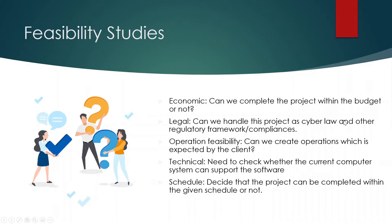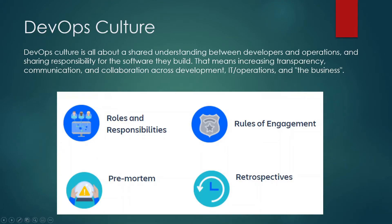Now let's talk about DevOps culture. I'm not explaining exactly what DevOps is here — that's out of scope. DevOps culture is a cultural shift. It's not simply about adopting agile planning, automated testing, or continuous delivery (CI/CD), although those practices are important. DevOps culture is about a shared understanding between developers and operations — that's where it gets its name — and sharing responsibility for the software they build, increasing transparency, communication, and collaboration across development and IT operations.